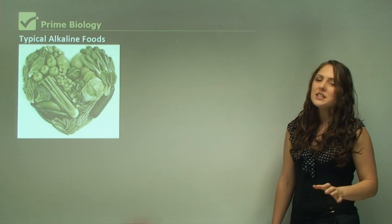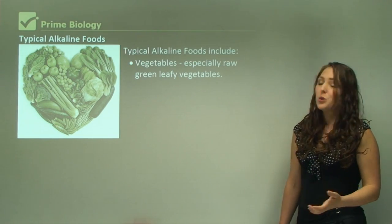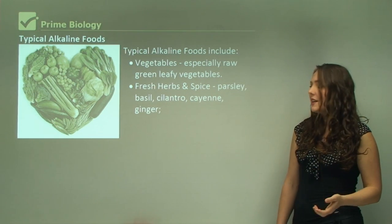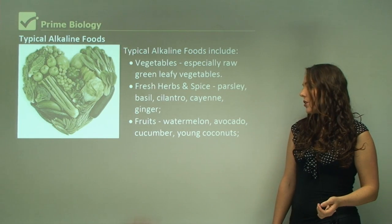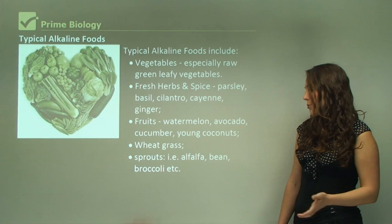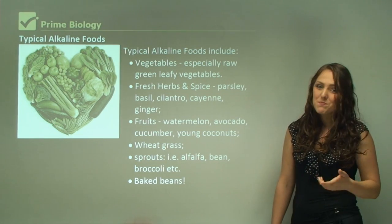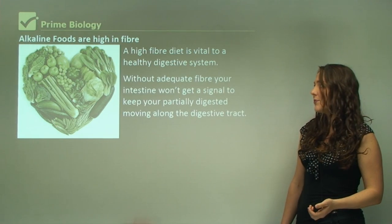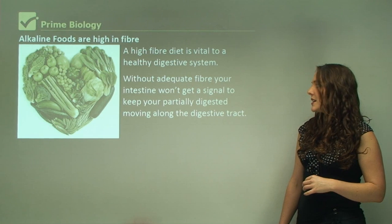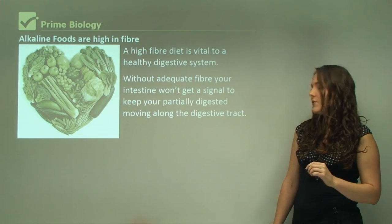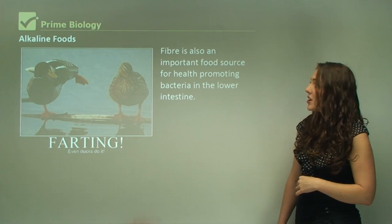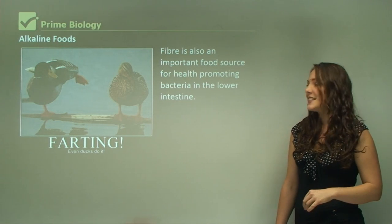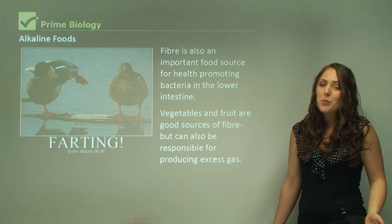Typical alkaline foods we eat include vegetables, especially raw leafy green vegetables, fresh herbs and spices like parsley, basil, cilantro, cayenne and ginger, fruits like watermelon, avocado, cucumber, young coconut, wheat grass and sprouts like alfalfa, bean, broccoli, and baked beans. All of these have something in common - they're all high in fiber. A high fiber diet is vital for a healthy digestive system. Without adequate fiber your intestine won't get a signal to keep your partially digested food moving along the digestive tract. Alkaline foods do have a reaction - they release gas. Fiber is also an important food source for health-promoting bacteria in the lower intestine. Vegetables and fruit are good sources of fiber but can also be responsible for producing excess gas.